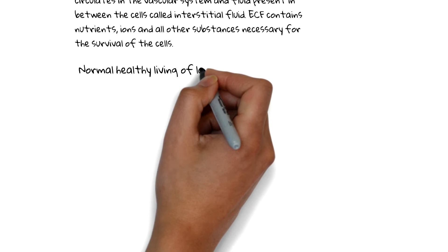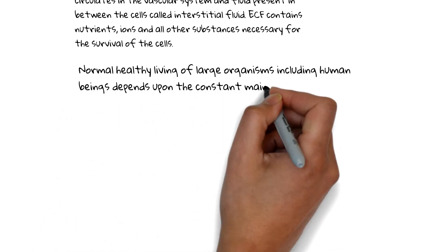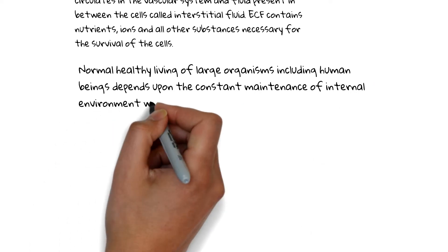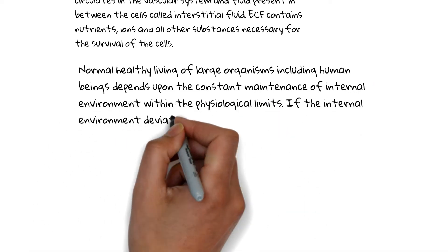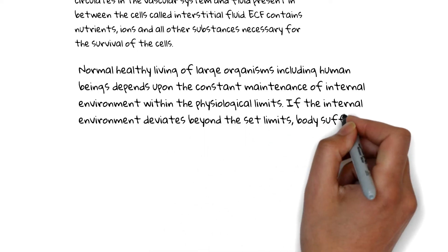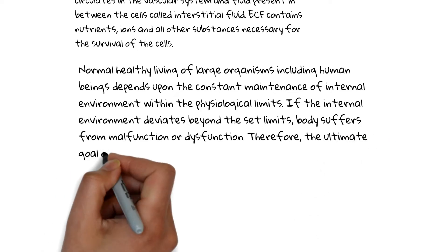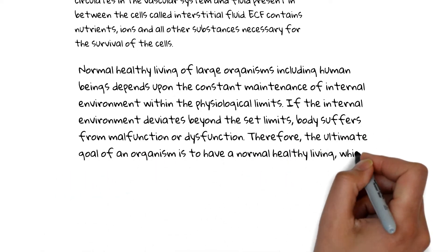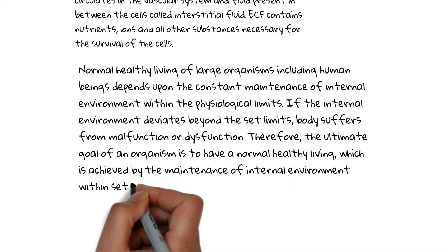Normal healthy living of large organisms including human beings depends upon the constant maintenance of internal environment within the physiological limits. If the internal environment deviates beyond the set limits, body suffers from malfunction or dysfunction. Therefore, the ultimate goal of an organism is to have a normal healthy living, which is achieved by the maintenance of internal environment within set limits.